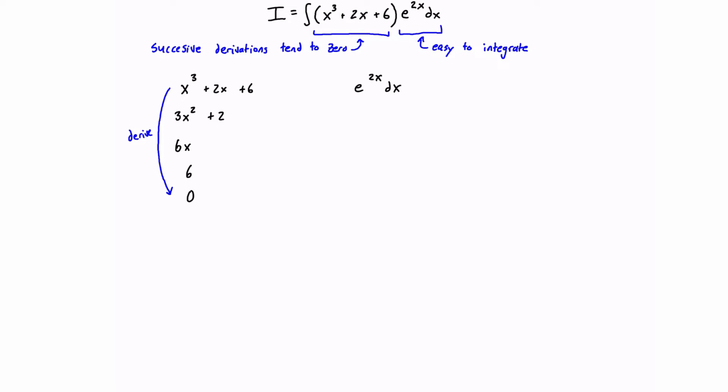And then e^(2x) dx is relatively easy to derive. Because from an integral table, which there is one linked in the description below, we can see that the integral of e^(ax) dx is just equal to 1 over a times e^(ax). So that means that the integral of e^(2x) is just going to be 1/2 e^(2x).